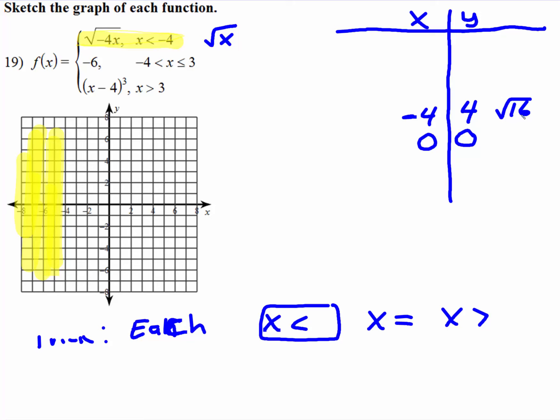How about if we put in negative 9? So if we put in negative 9, negative 9 times negative 4 is the square root of 36. Well, the square root of 36 is 6.